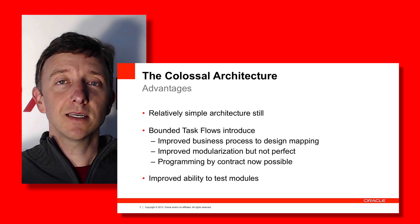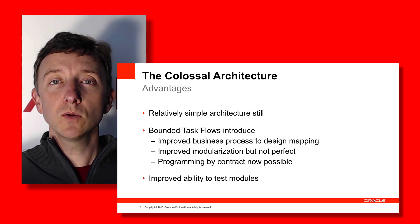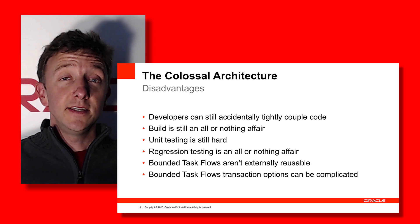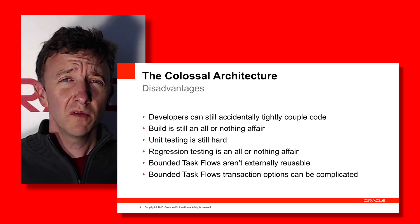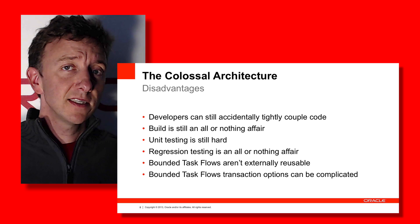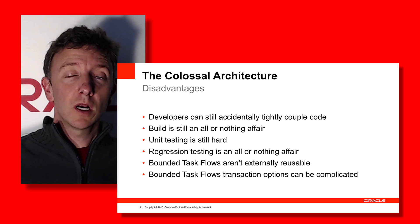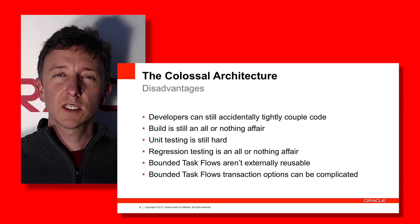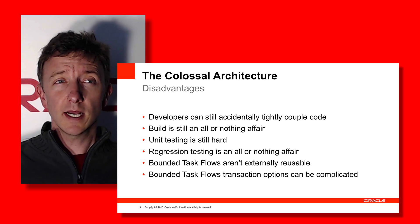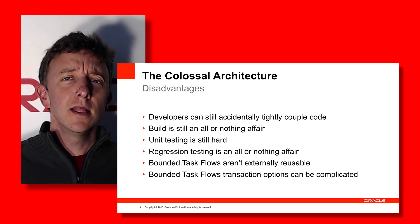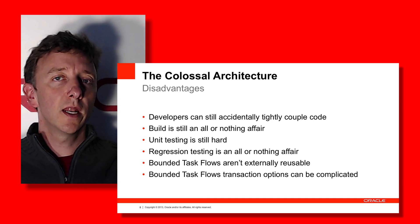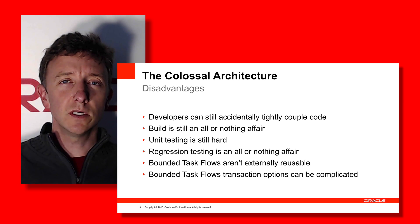The disadvantages of the Colossal Pattern: we've introduced bounded task flows and we do get better modularization in our application workspace, but it's not perfect. Coders can still accidentally tightly couple code — there's nothing to really stop them from using code from one bounded task flow in another bounded task flow that wasn't our original intention.